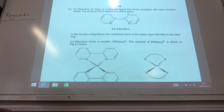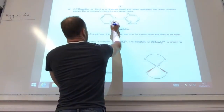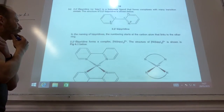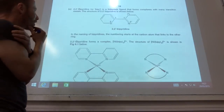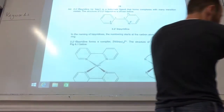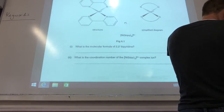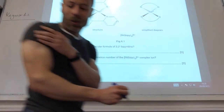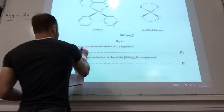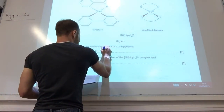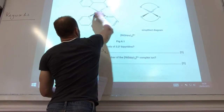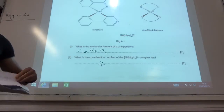We've now got a bidentate ligand. You can see there's a lone pair on each nitrogen. They give various structures. First, what's the molecular formula of bipyridine? If you count it all up, you get C₁₀H₈N₂. What is the coordination number? You just count up the bonding arms - it's going to be 4.